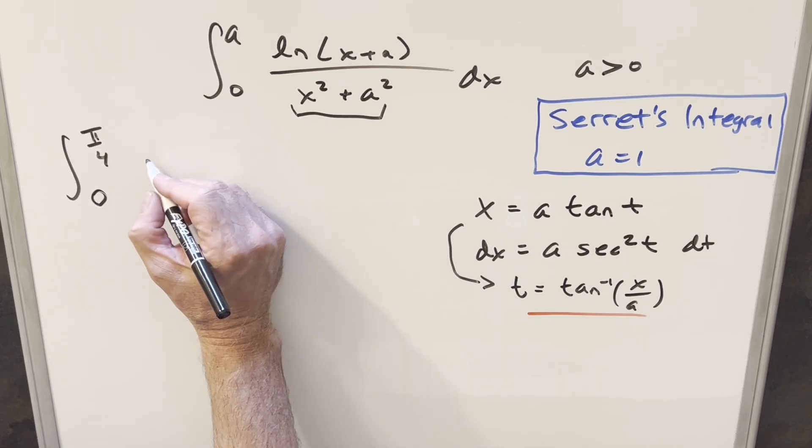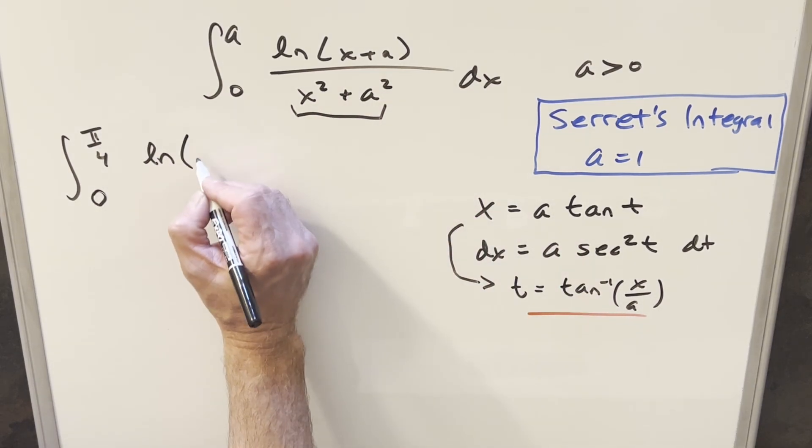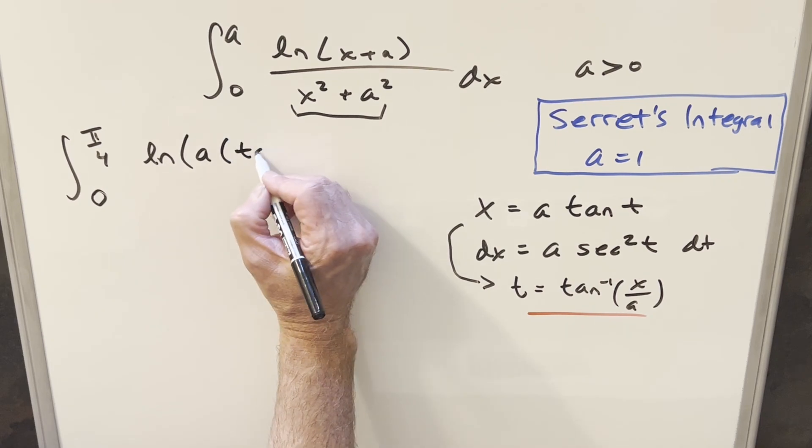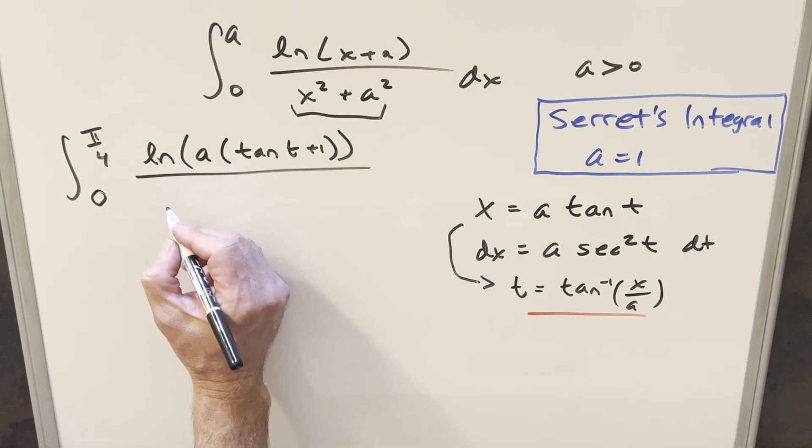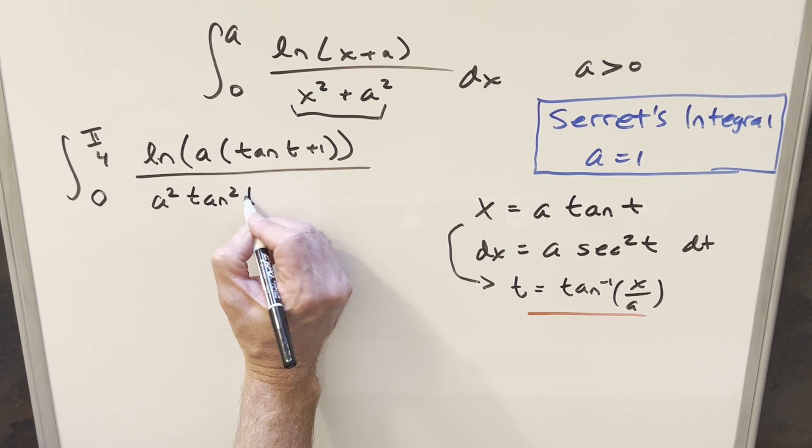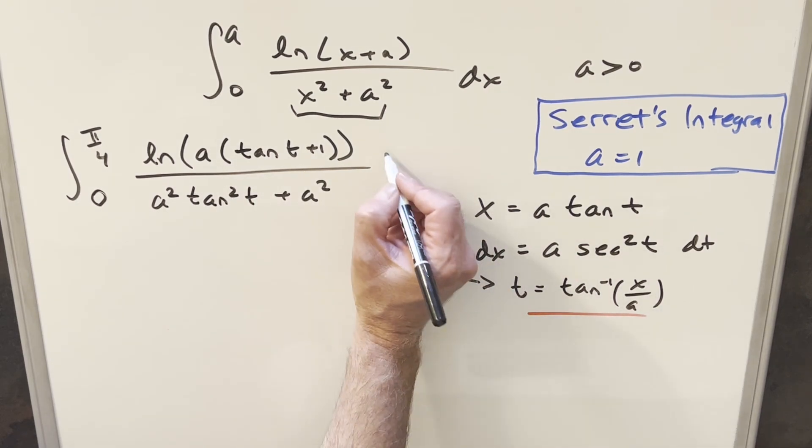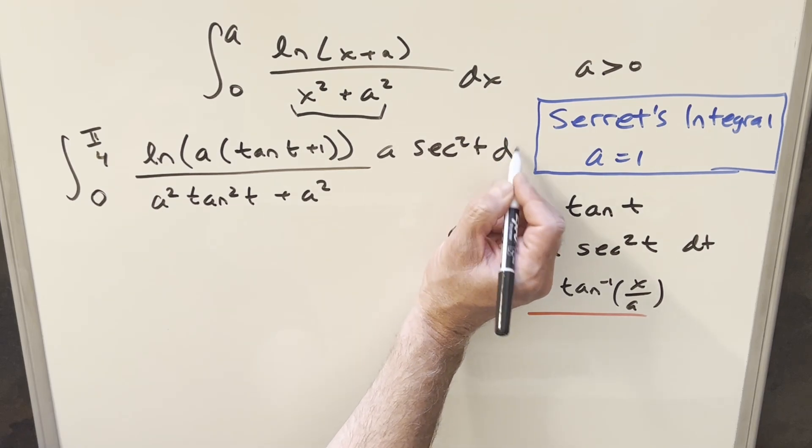For this numerator, we're going to have natural log of this plus A, but let's factor an A out right away because that's going to help. Factoring the A out, this is going to become A times tan t plus 1. Then with the denominator, this is going to become A squared tan squared t plus A squared. And dx is going to be A secant squared t dt.